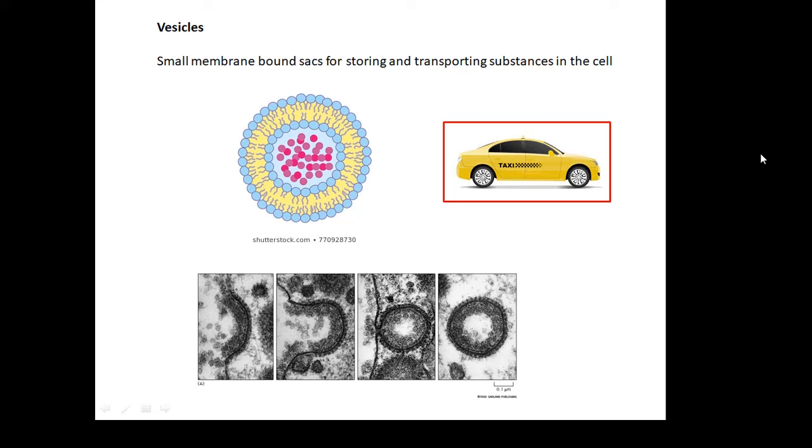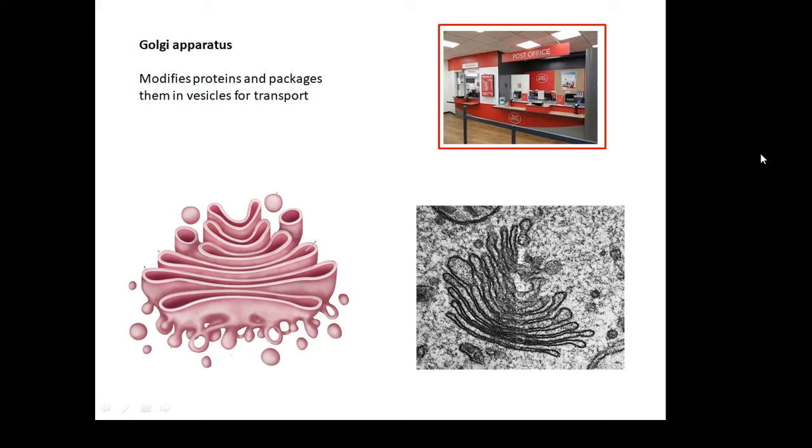The Golgi apparatus. This modifies proteins and packages them in vesicles for transport. It's a bit like the post office. Stuff goes to the post office, and they do stuff to it. Maybe they change it, add bits to it. Then they put it in packages, which are the vesicles, and send them off. If you look at the diagram and the photograph, it's a very distinctive looking thing. It's called the Golgi apparatus, like the post office.